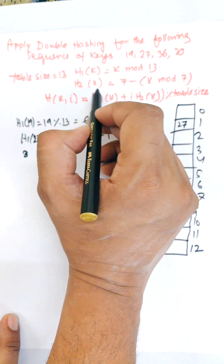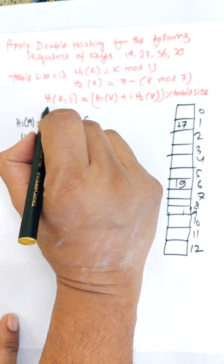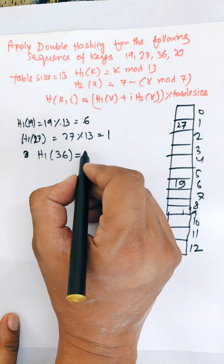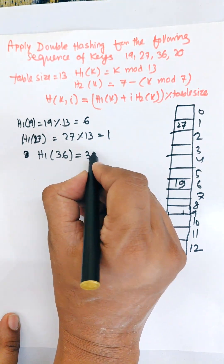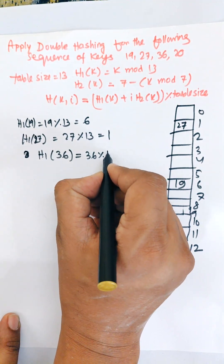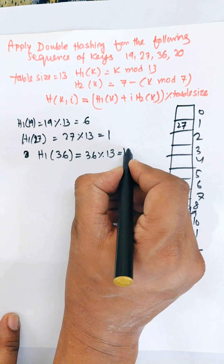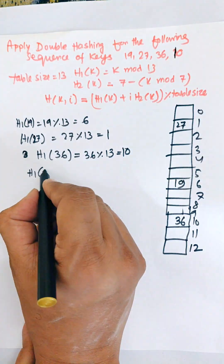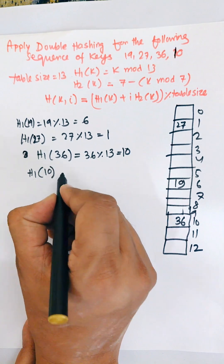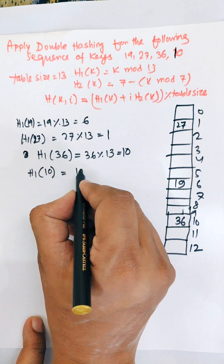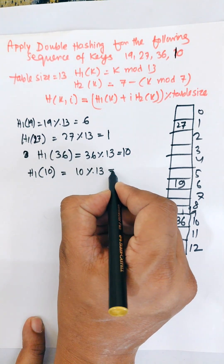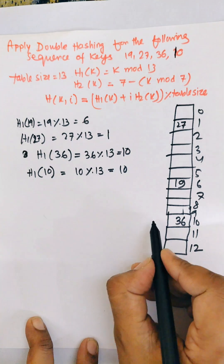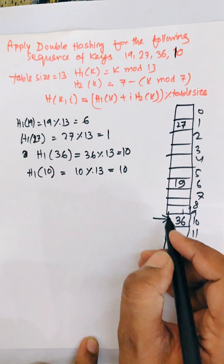For h1(36): 36 mod 13 = 10, so it would be stored at location 10. However, location 10 already has a value, so there is a collision.